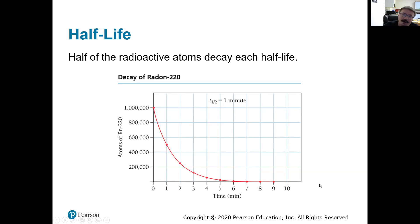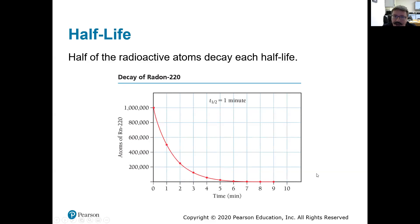After about six or seven half-lives the amount approaches zero. Depending on how sensitive our instruments are, we can usually only determine the date or observe radioactive material up to about seven, eight, or at most nine half-lives. After that, for Radon-220, after nine minutes there really isn't a detectable amount left, and even if we can detect it we probably can't say the sample is exactly nine and a half or twelve minutes old.